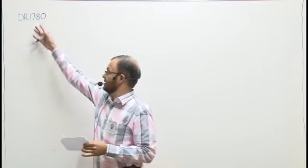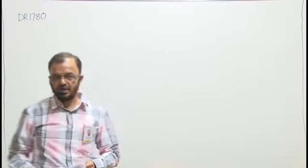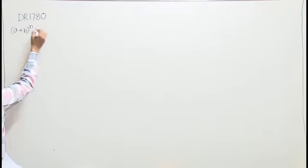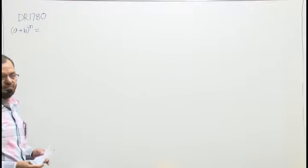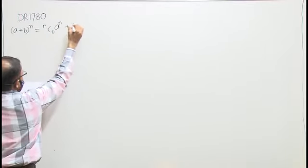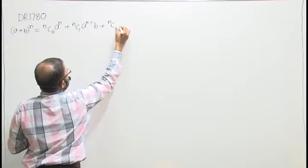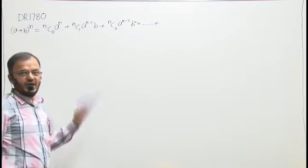Coming to question Dr 1780, it is a question of binomial expansion. I have to find the coefficient of x power 4. Before going to this, I will write the formula: (a + b) whole power n, where n is some natural number. I can expand this as: nC0 · a^n + nC1 · a^(n-1) · b + nC2 · a^(n-2) · b² and so on.